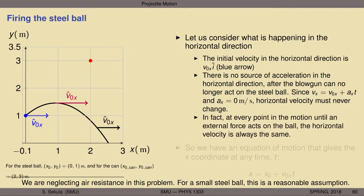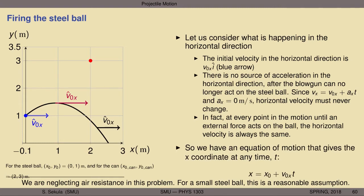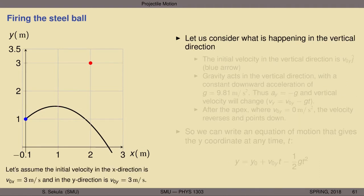Since the acceleration component in the x direction is zero, the horizontal velocity remains constant throughout the entire motion. The equation of motion gives the x coordinate at any time t after launch: x = x₀ + v₀ₓ · t. This is a simple equation with no acceleration term, making the horizontal analysis straightforward.